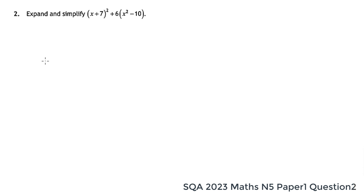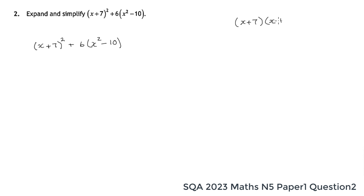Here's question two — we're asked to expand and simplify the algebraic expression: x plus seven, squared, and then six times x squared minus ten. For the first bracket, various ways of doing that. One way is to use FOIL — first, outside, inside, last. I'll do that here, and then show you another way.